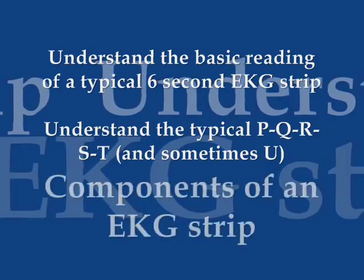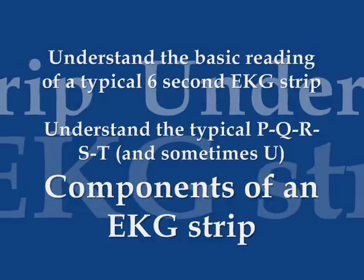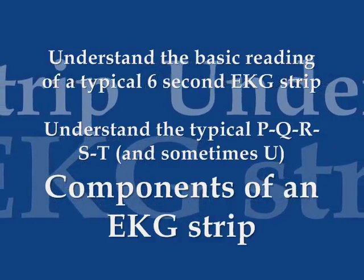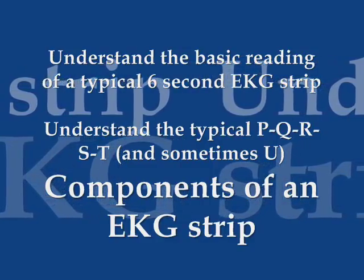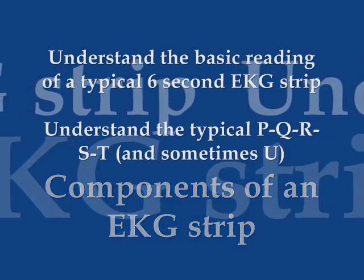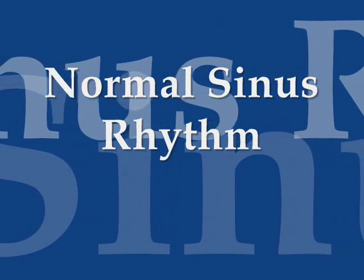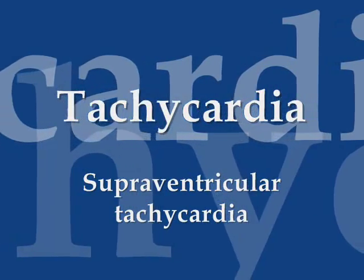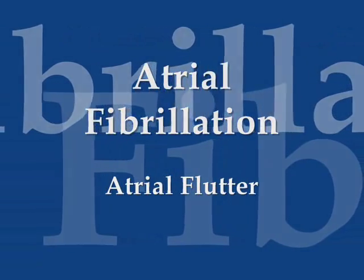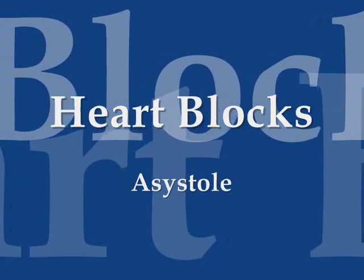You will be able to understand the basic reading of a typical 6-second EKG strip. You will understand the typical PQRST and sometimes U components of an EKG strip. You will be able to interpret on an EKG: normal sinus rhythm, bradycardia, tachycardia, supraventricular tachycardia, atrial fibrillation, atrial flutter, ventricular fibrillation, heart blocks, and asystole.